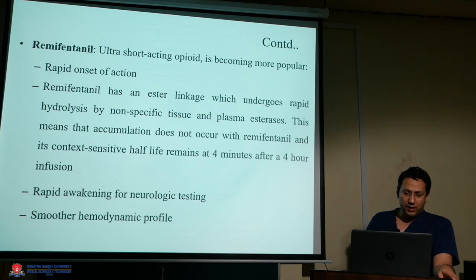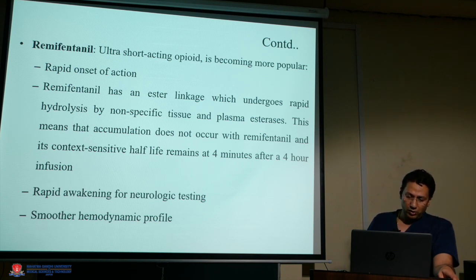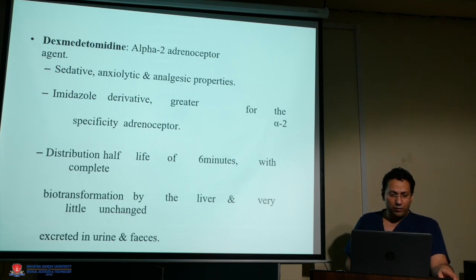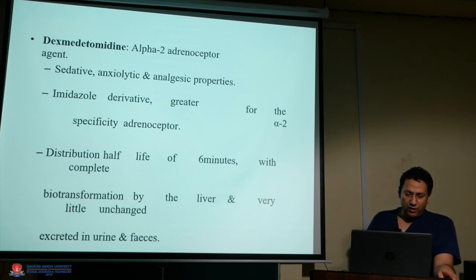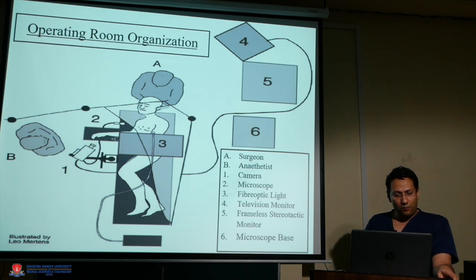Remifentanil is an ultra-short-acting opioid that has become more popular because of its rapid onset of action, very short context-sensitive half-life of 4 minutes, rapid awakening for neurological testing, and smooth hemodynamic profile. Dexmedetomidine, an alpha-2 adrenoceptor agonist, has sedative, anxiolytic, and analgesic properties. It is an imidazole derivative with high selectivity for alpha-2 adrenoceptors, a distribution half-life of 6 minutes, complete biotransformation by the liver, and very limited unchanged drug excreted in urine and feces.